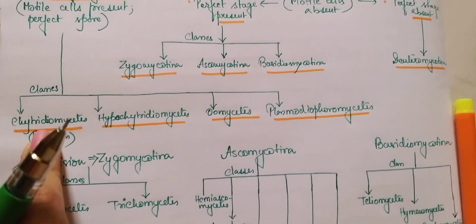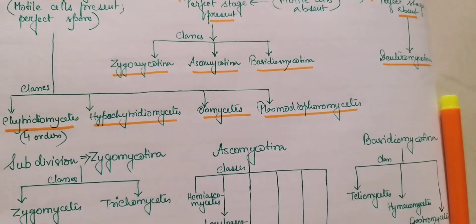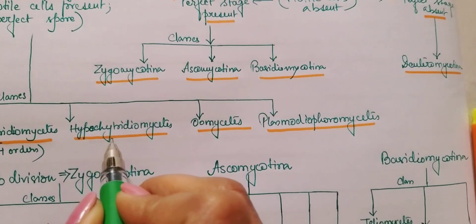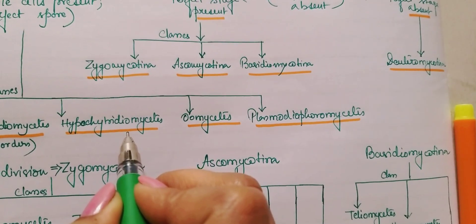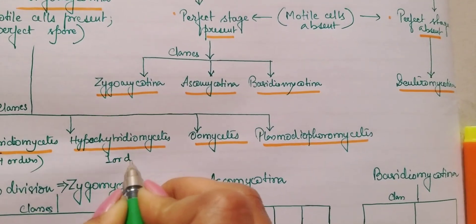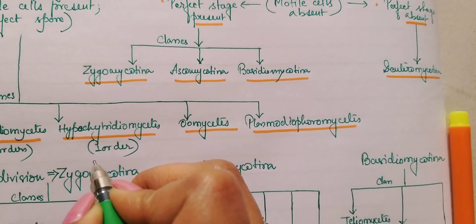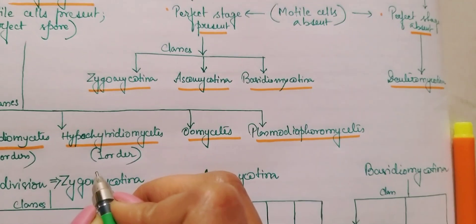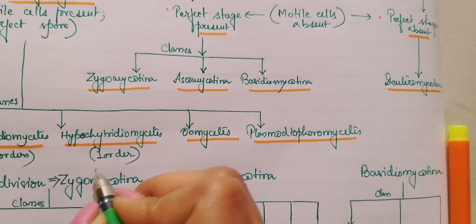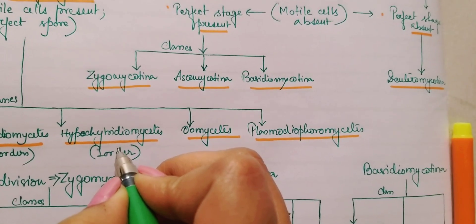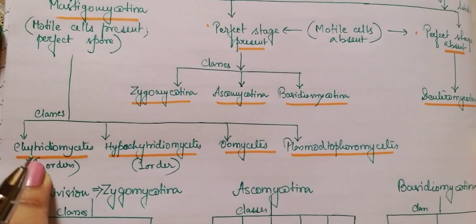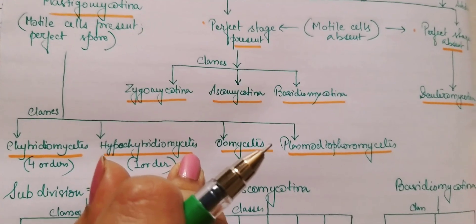Next we go to Hypochytridiomycetes. Here we see only one order — also called Hypochytridiomycetes. This class is also uniflagellate, but the flagellum is of tinsel type, and it is anteriorly located — unlike Chytridiomycetes where it was posteriorly located and whiplash type.